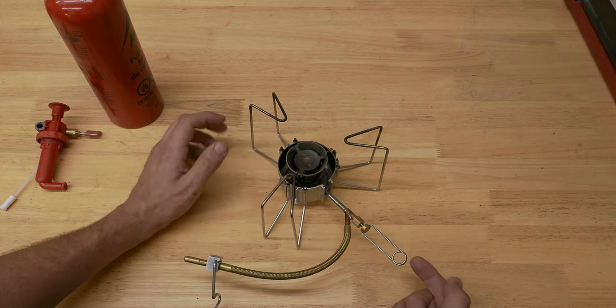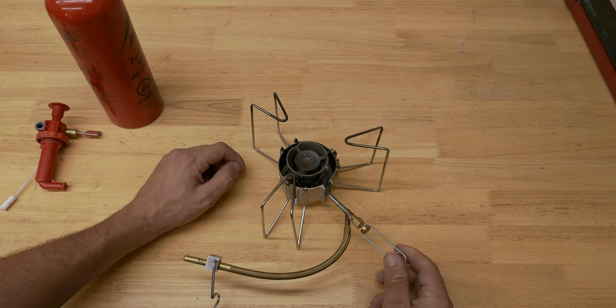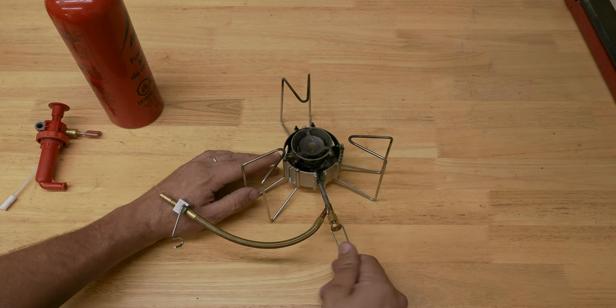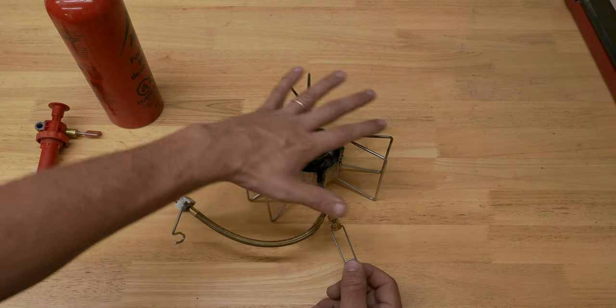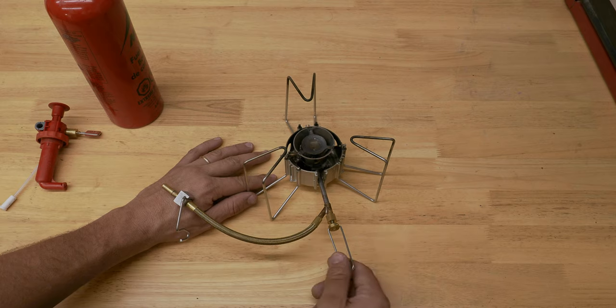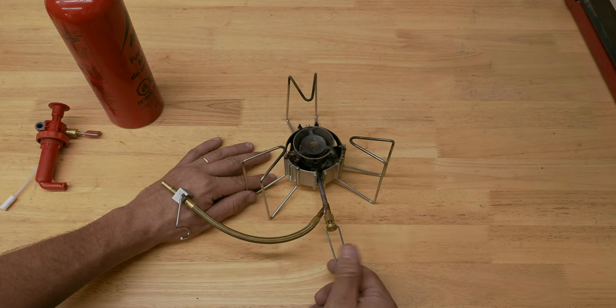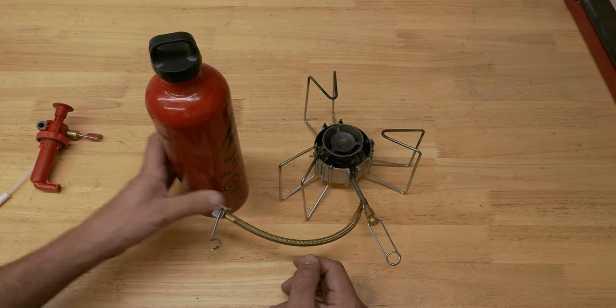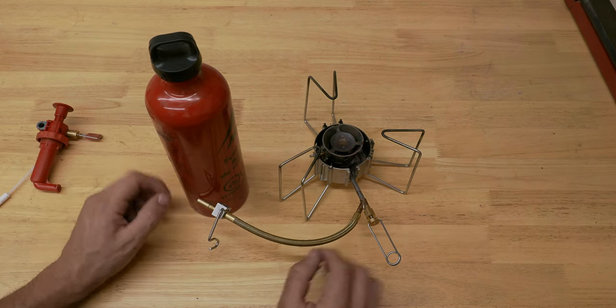The other thing that I liked too was the flame adjustment right here. The fact that this is way out here is super nice because it allows you to get your hand away from a large cooking surface or large cooking pot and keep yourself a little bit protected and have some control. Okay, cool. So that's the stove and we'll continue setting it up and we get into our first problem with this kit.